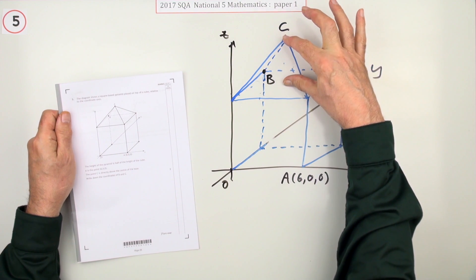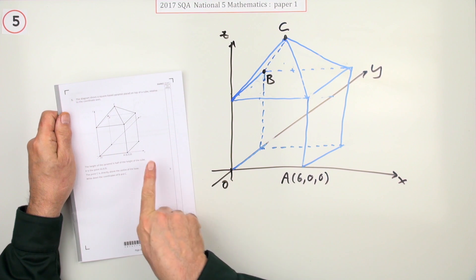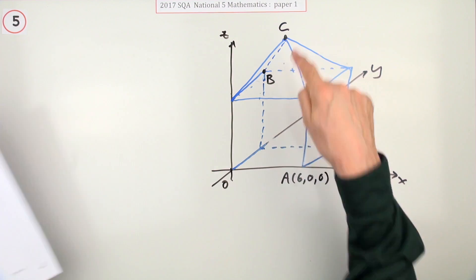So all the sides are the same with a square base pyramid sitting on top of it. It says that the height of the pyramid is half the height of the cube. It gives you the coordinates of one of the corners on the base, and it says find the coordinates of B and C.